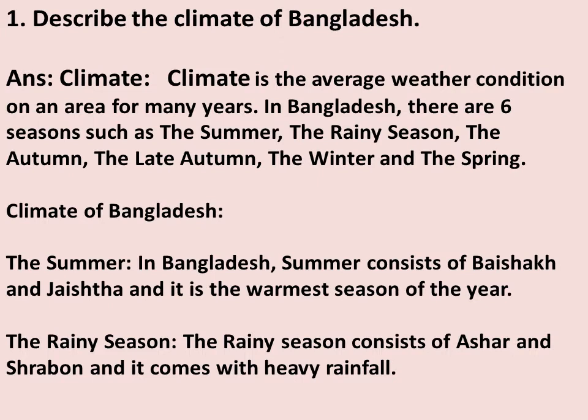The Summer: In Bangladesh, summer consists of Bhaishak and Jashtha, and it is the warmest season of the year. The Rainy Season: The rainy season consists of Ashar and Shrabun, and it comes with heavy rainfall.